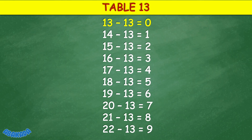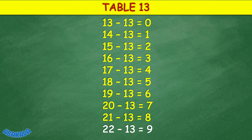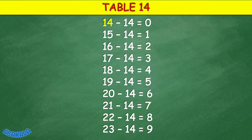Table 13: 13 minus 13 equals 0, 14 minus 13 equals 1, 7 minus 13 equals 8, 18 minus 13 equals 4, 18 minus 13 equals 5, 19 minus 13 equals 6, 20 minus 13 equals 7, 21 minus 13 equals 8, 22 minus 13 equals 9.